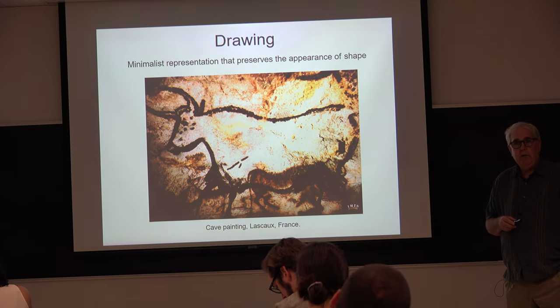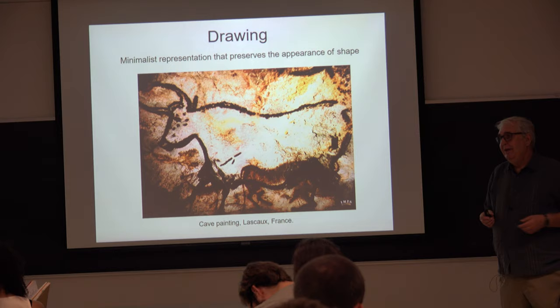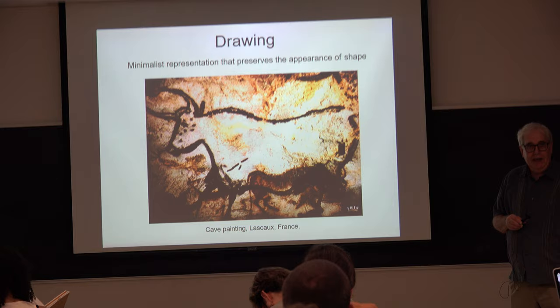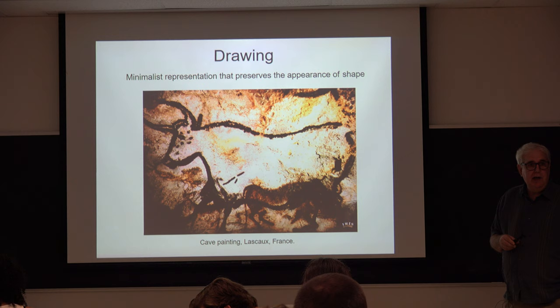Last time we covered linear perspective — the idea that we can take the projected size of objects as a way of computing properties of visual space. I gave you several different models of how you might do that, and argued that the visual system actually has to use several different models depending on the context it finds itself in.